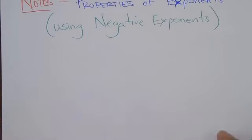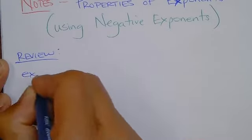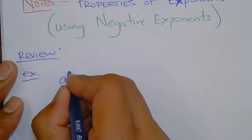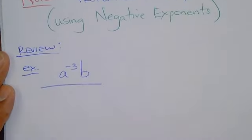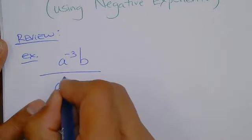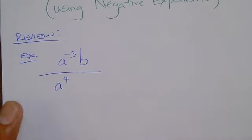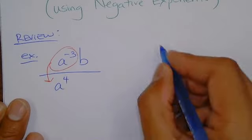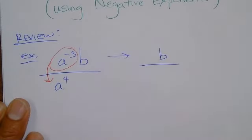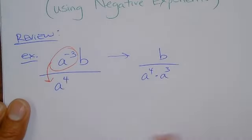So what I'm talking about is this — this is review, right? You already know this. An example would be: if you have a to the negative 3 times b, over a to the 4. This is easy. You see a negative exponent, you know that's the one that has to move. It's pretty obvious which one has to move when you see the negative exponent.